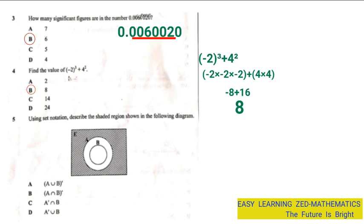Let's go to question 5, which is: use set notation to describe the shaded region shown in the following diagram. One thing you need to understand is to first study the Venn diagram before you give an answer. When you look at the Venn diagram, you can see that set B is a subset of set A — all the members of set B are found in set A, and set A is the bigger circle. The shaded area is showing elements which are not members of set A or set B.